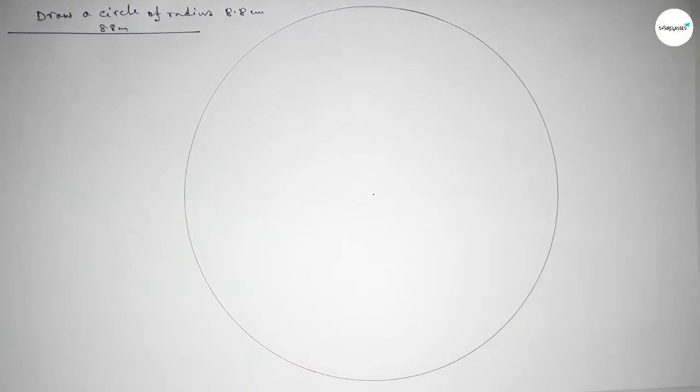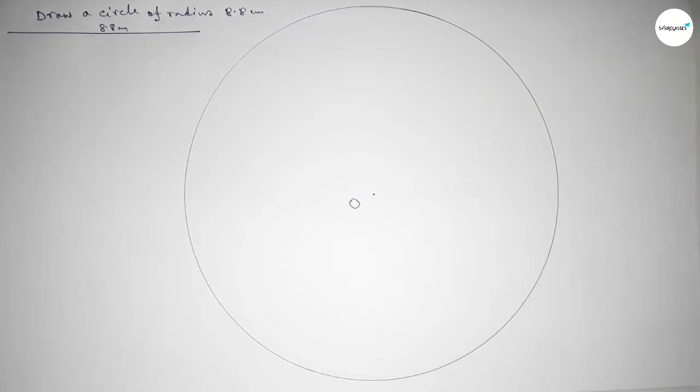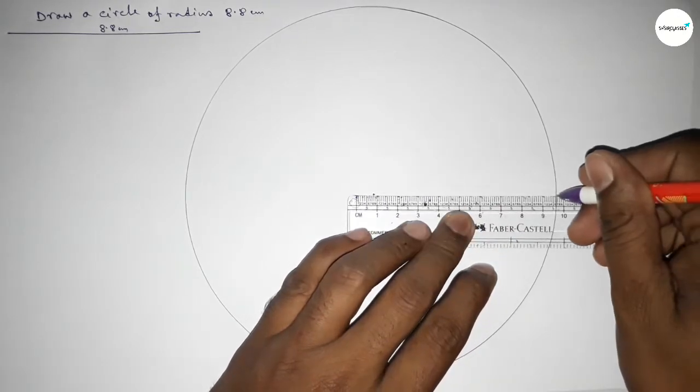And this represents a circle. So taking here the center, here O. Now joining this line and this is the radius of this circle.